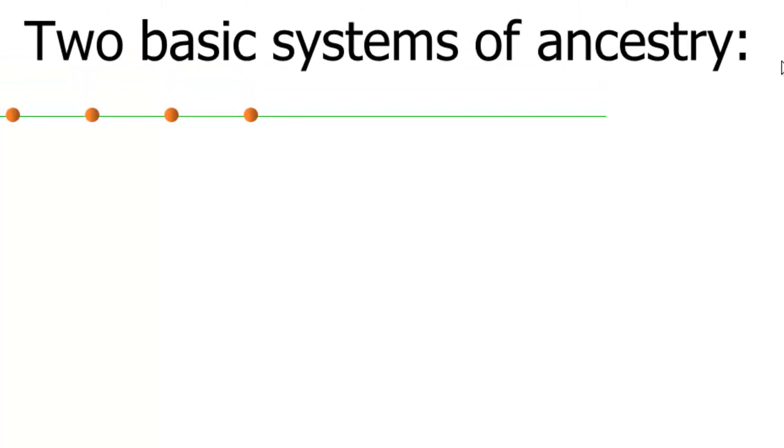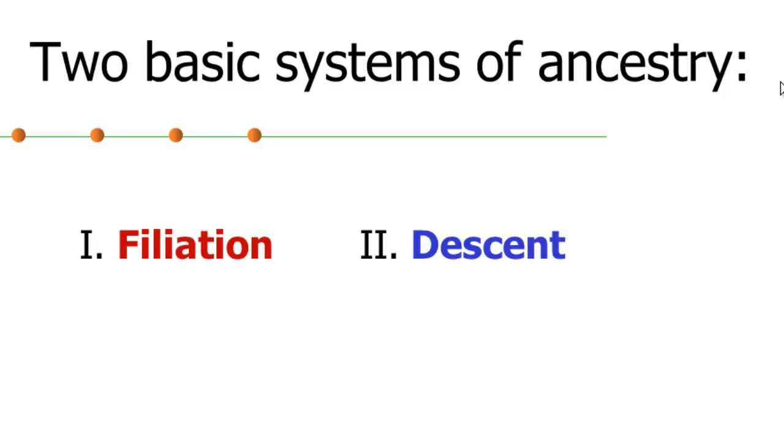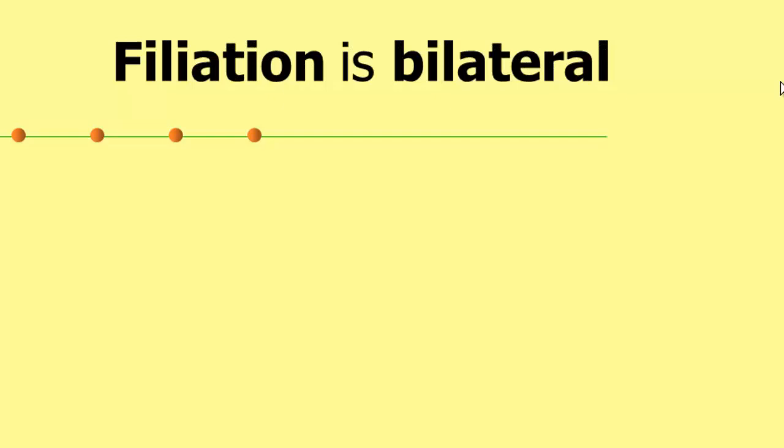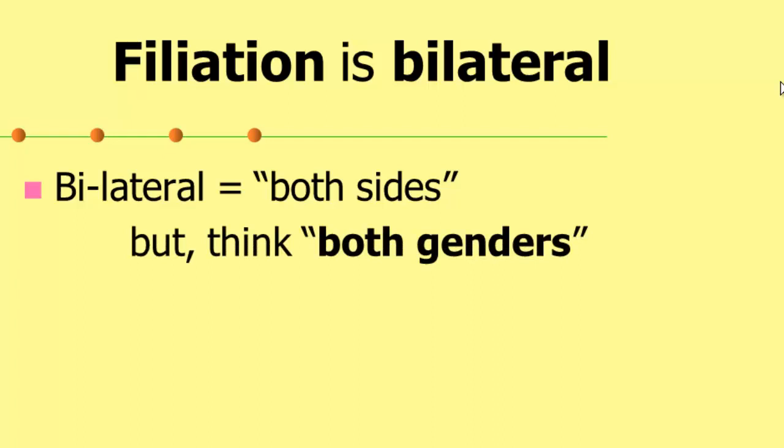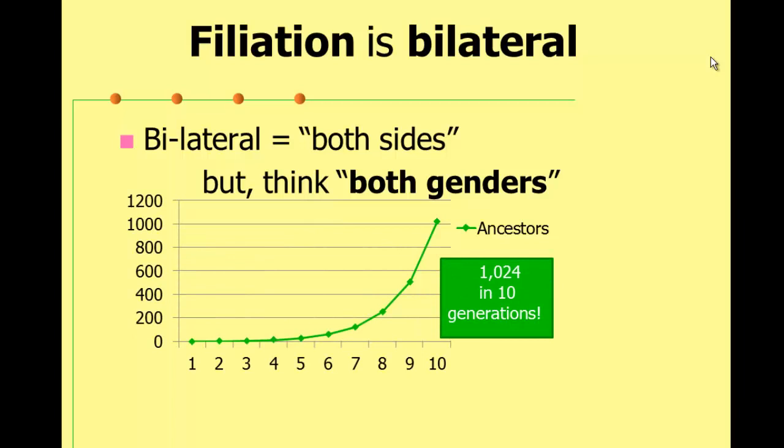So we've discussed two basic systems of ancestry, affiliation and descent, and now we're going to compare them and draw out some differences, especially in their social consequences. So affiliation is bilateral, and that means via both genders. And one consequence that we related to bilateral affiliation is the exponential growth of ancestors to the power of two, such that in just ten generations we'd have over a thousand direct ancestors. And this necessarily caps our genealogical memory fairly recently in the past.